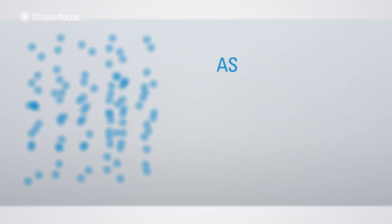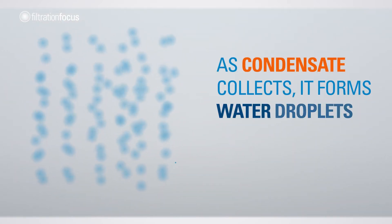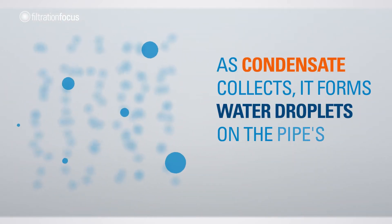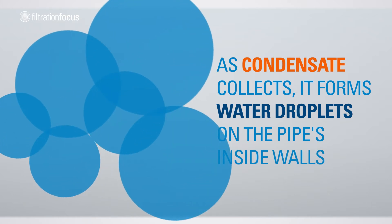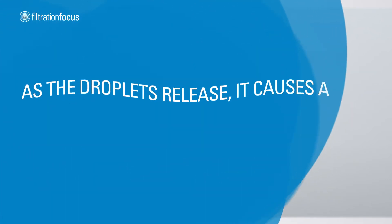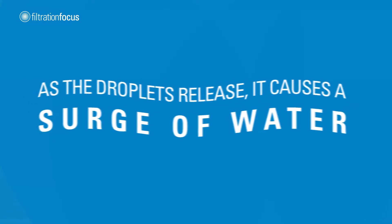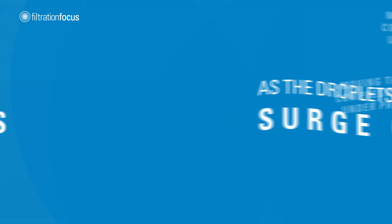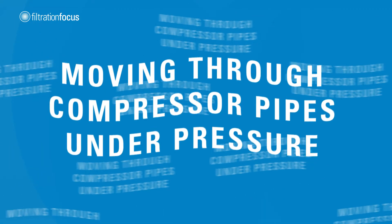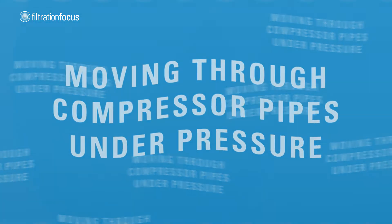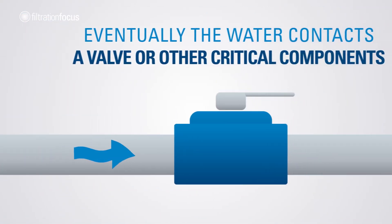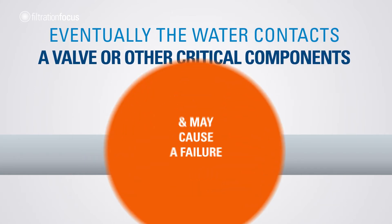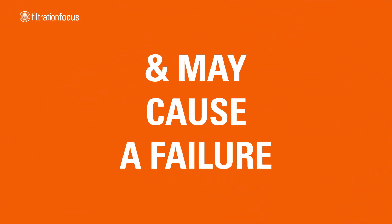As condensate collects, it forms water droplets on the pipes' inside walls. As the droplets release, it causes a surge of water moving through compressor pipes under pressure. Eventually, the water contacts a valve or other critical components and may cause a failure.